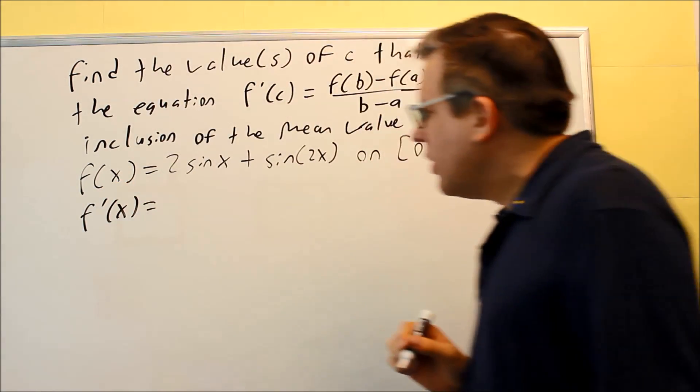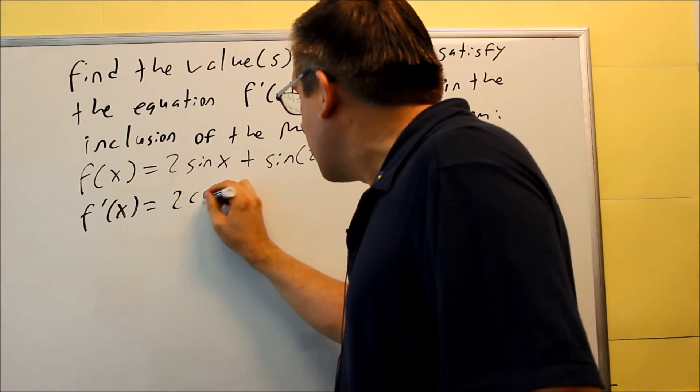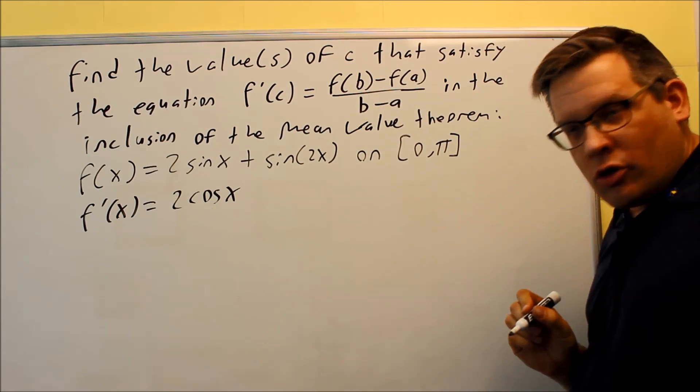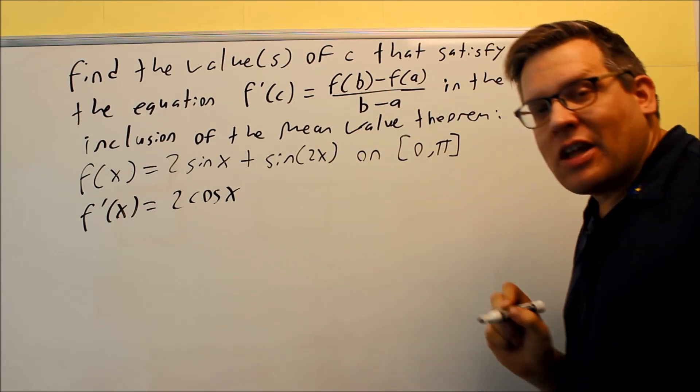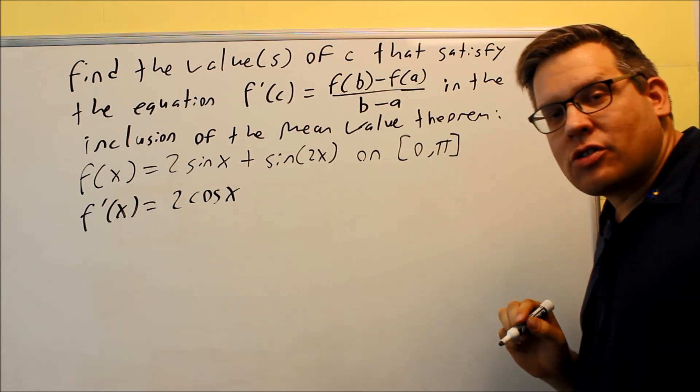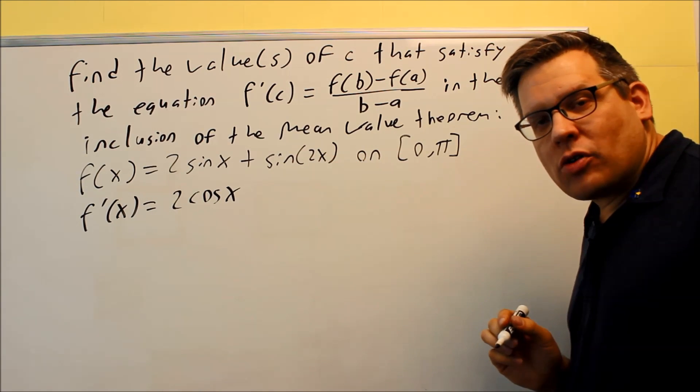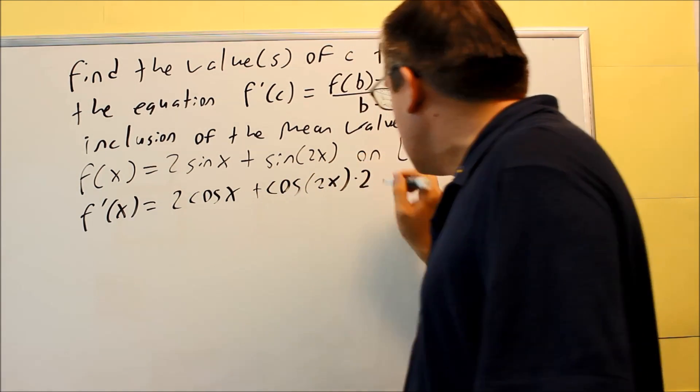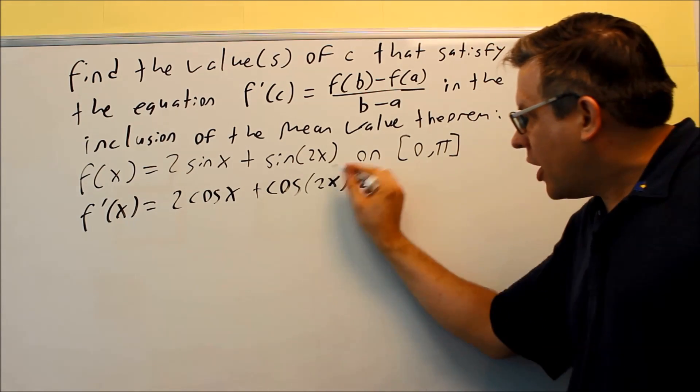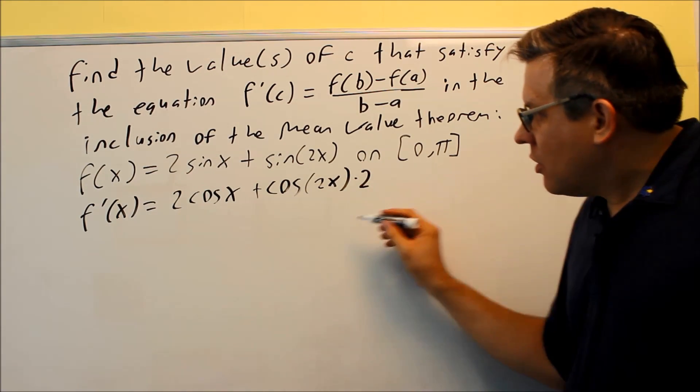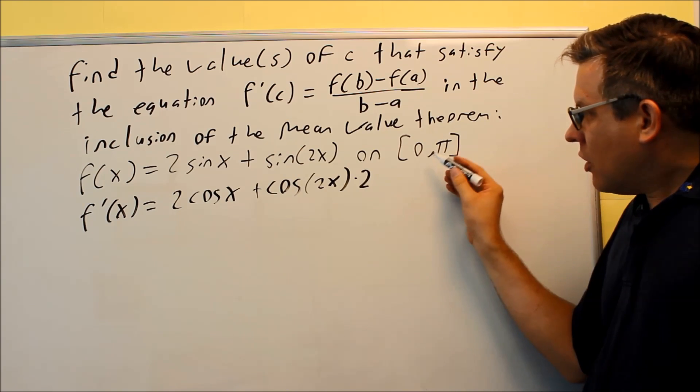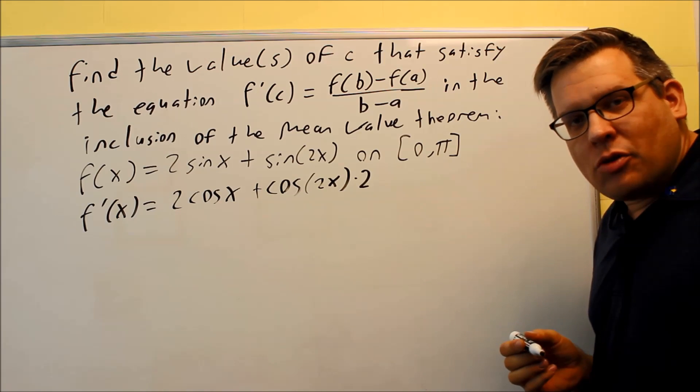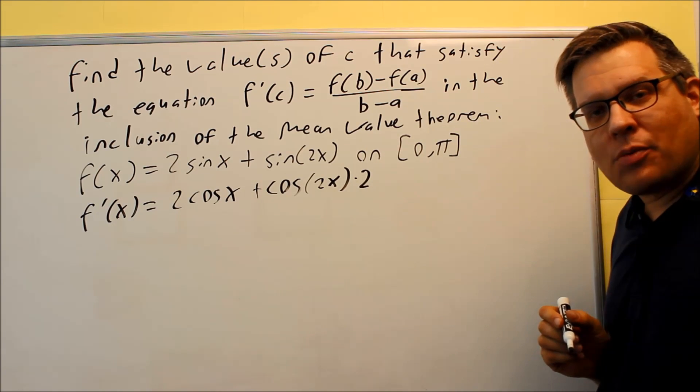Next, we need to take a look at the derivative and see if that's continuous on the open interval from 0 to π. Our derivative: derivative of sine is cosine, so 2cos(x). This one involves the chain rule because you have something inside that's not just a single x. We do the outside first, derivative of sine is cosine, so we do cos(2x), but don't forget you have to multiply by the derivative of the inside. That's our chain rule. So f'(x) = 2cos(x) + 2cos(2x). If I put any number between 0 and π in here, that's also continuous, so Mean Value Theorem definitely can be applied here.